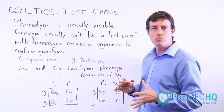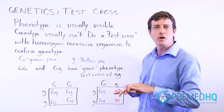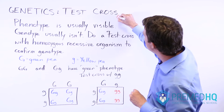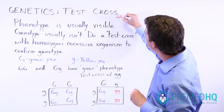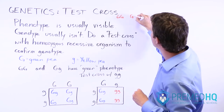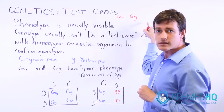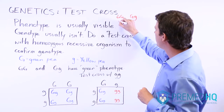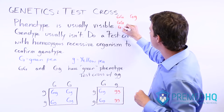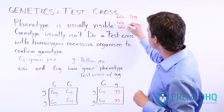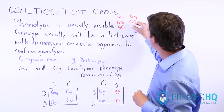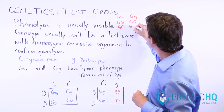It can be a bit more complicated with an additional generation above. For example, if you breed a homozygous dominant parent with a heterozygous parent and end up with many offspring, we can go through the Punnett square to see what that looks like.